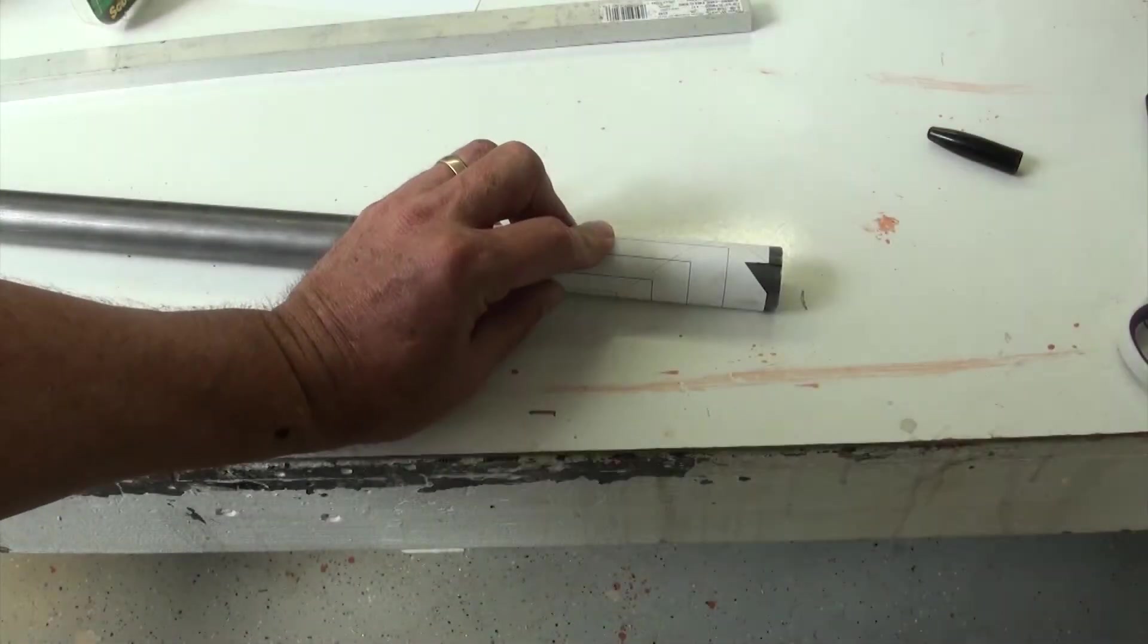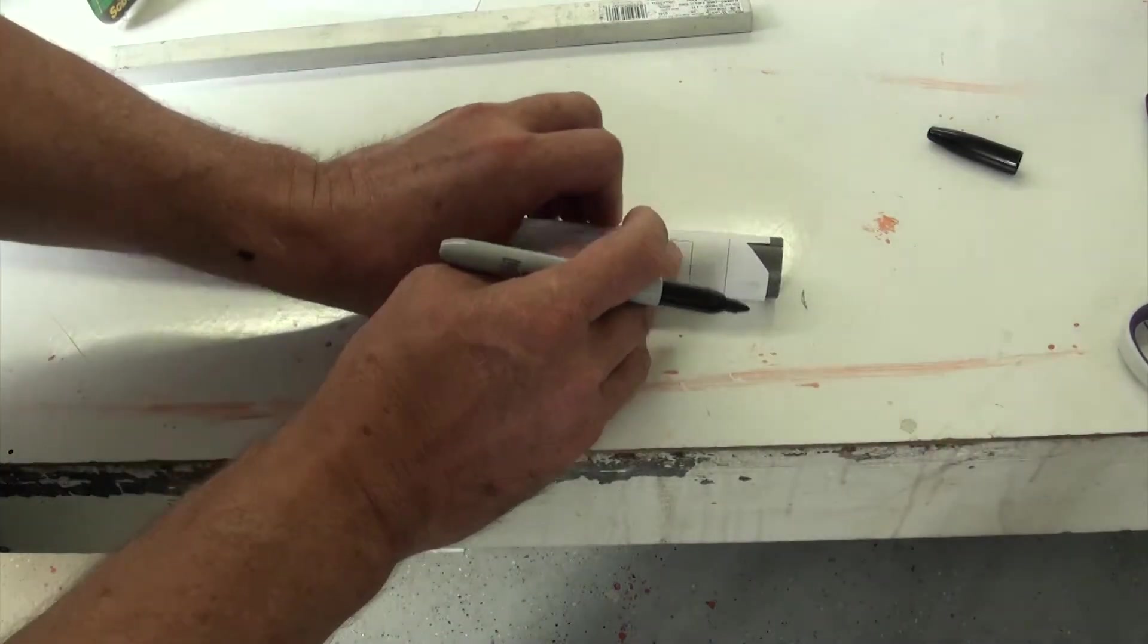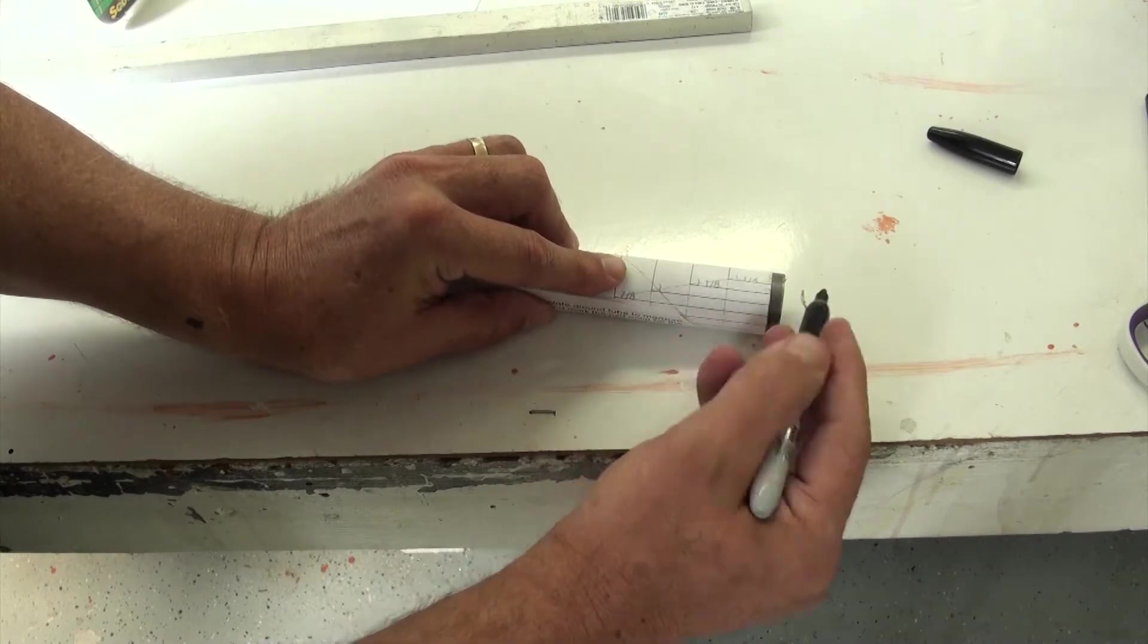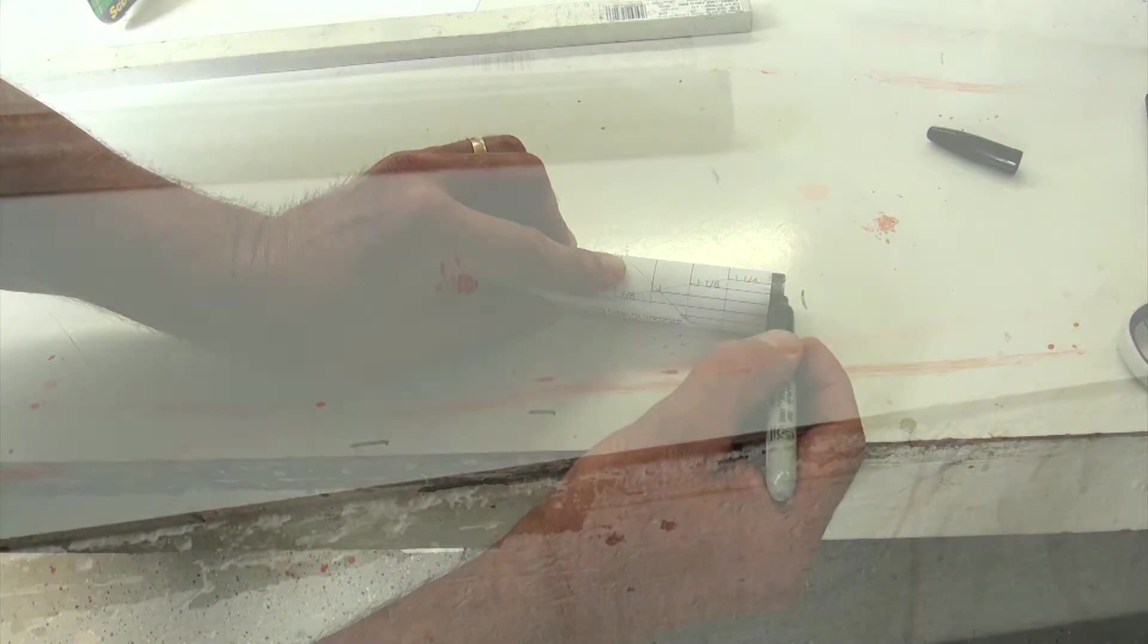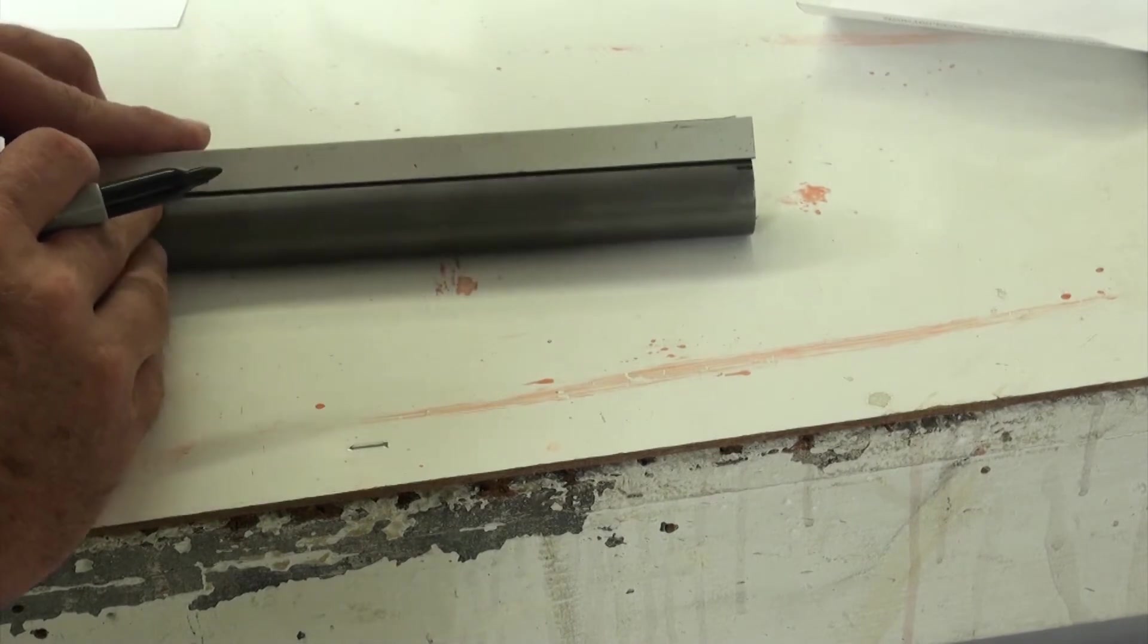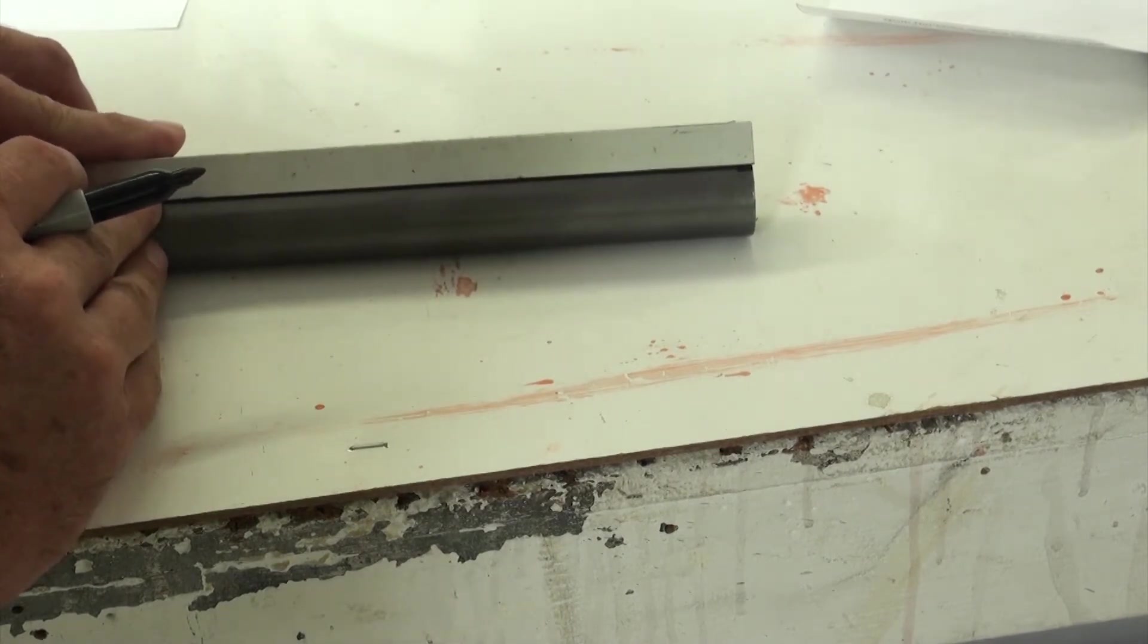Since this keel pocket is manufactured from tubing that is being split down the length, we can also use this template to mark the adjacent side of the tubing for the purposes of maintaining a proper cut. Once we've marked both sides of the tube, we will need to make a line down either side that is parallel with the tube.